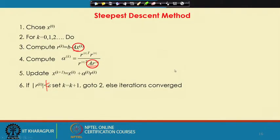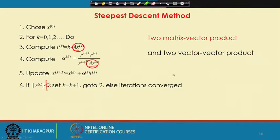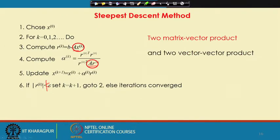There are two matrix-vector multiplications and two vector-vector products: r_k-transpose r_k and r_k-transpose A r_k. The vector-vector products are less time-consuming — for 10^6 rows, only 10^6 operations are needed. But each matrix-vector multiplication requires 10^12 operations, which is very computationally costly. We need to see how we can reduce the number of operations and improve the algorithm to avoid at least one matrix-vector multiplication.